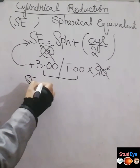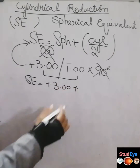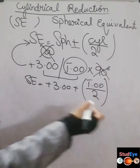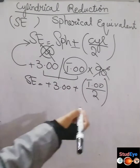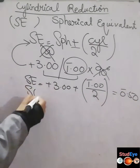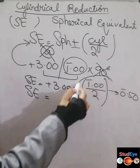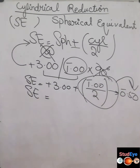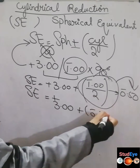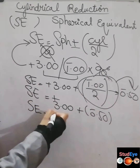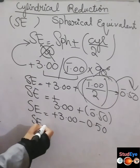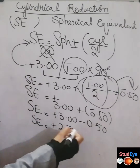The spherical equivalent equals plus three, algebraically added to half of the cylinder. The cylinder is minus one, so half of the cylinder is minus one divided by two, which equals minus 0.50. Adding the sphere to half the cylinder: plus three plus minus 0.50. Since plus and minus gives minus, this becomes plus three minus 0.50, which equals plus 2.50 diopter sphere.